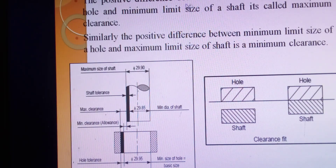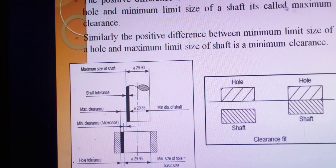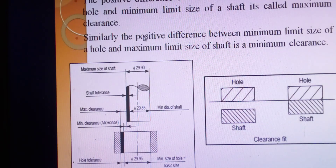The positive difference between the maximum limit of size of the hole and the minimum limit of size of the shaft is called the maximum clearance — when the hole size is at maximum and the shaft is at minimum. Similarly, the positive difference between the minimum limit of size of the hole and the maximum limit of size of the shaft is the minimum clearance — when the hole is at its smallest and the shaft at its largest.